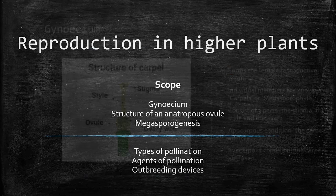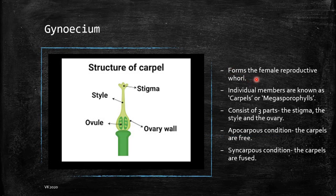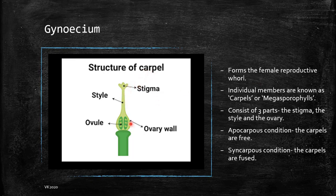Let's start with the gynecium. The gynecium forms the female reproductive whorl of the flower, as the androecium forms the male reproductive whorl. Each unit or each member of the gynecium is known as a carpel. It can also be called a megasporophyll because it is the one which bears the megaspores, which are your female gametes. It consists of three basic parts: the stigma, the style and the ovary.